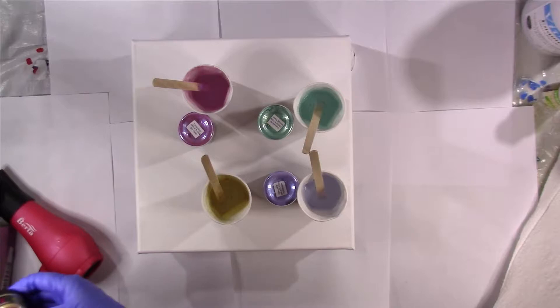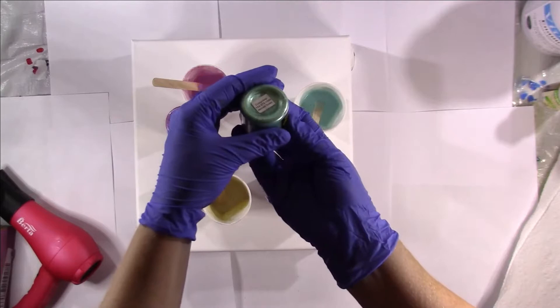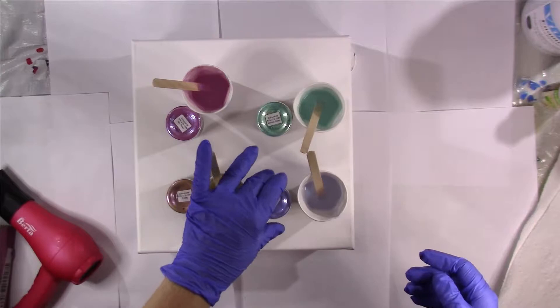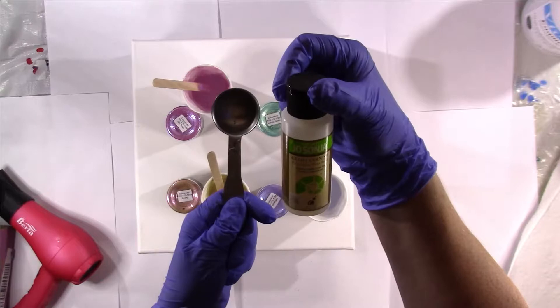So the colors I'm going to use today are Firefly, Shy Rose, Mermaid Scales, and Hydrangea. What I did is I got my tablespoon, I did one tablespoon of the Jo Sonja glass varnish. I butchered that name, Jo Sonja glass varnish.